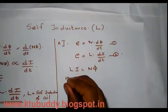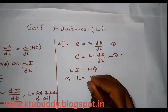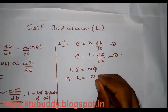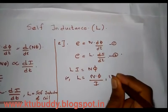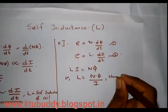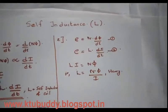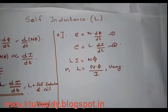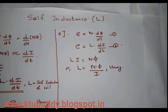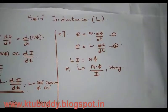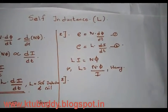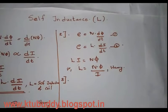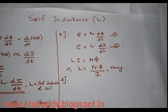From the relation L·i = N·φ, we can write the self-inductance L = Nφ/i, in henry. This is the second expression for self-inductance. Next, by considering the physical parameters of the coil, we can derive a third expression for self-inductance.